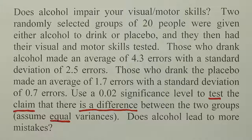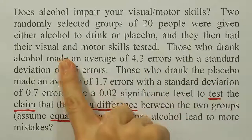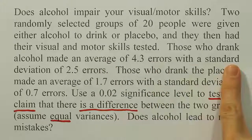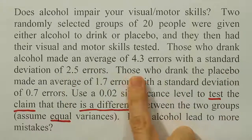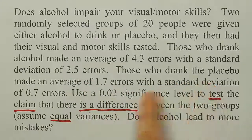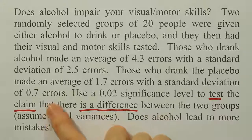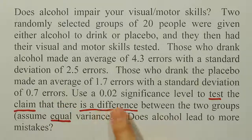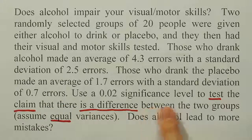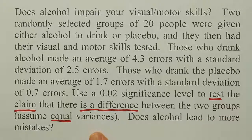Does alcohol impair your visual motor skills? Two randomly selected groups of 20 people were given either alcohol or a placebo, and they then had their visual and motor skills tested. Those who drank alcohol made an average of 4.3 errors with a standard deviation of 2.5, while those who drank the placebo made an average of 1.7 errors with a standard deviation of 0.7. Use a 2% significance level to test the claim that there is a difference between the two groups. Assume equal variances.